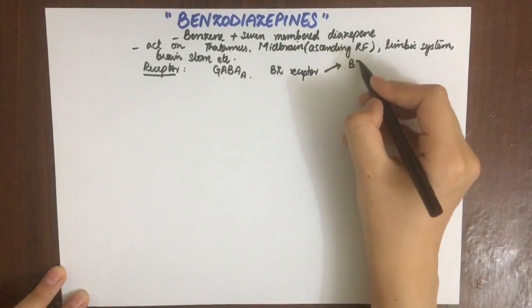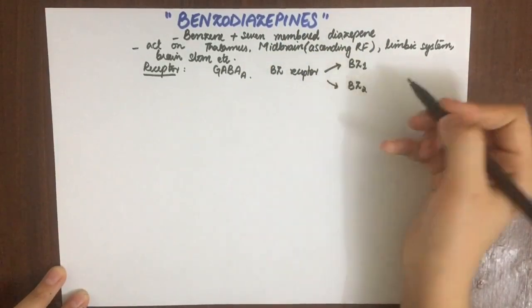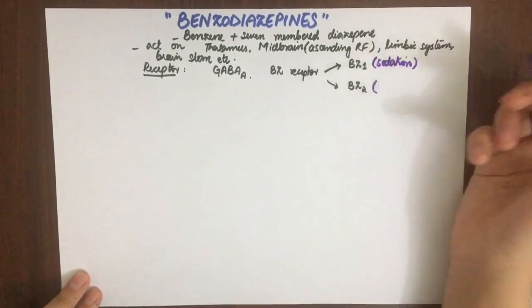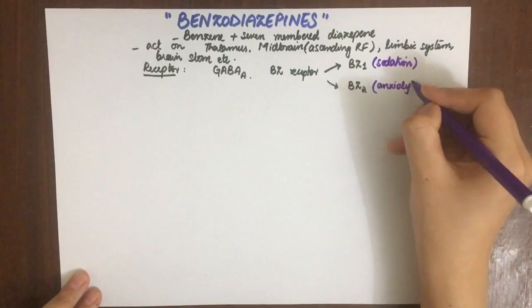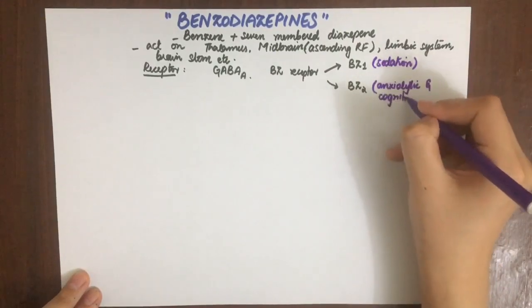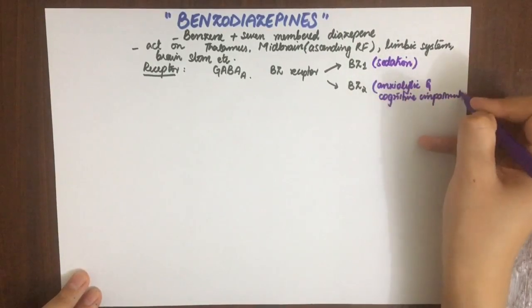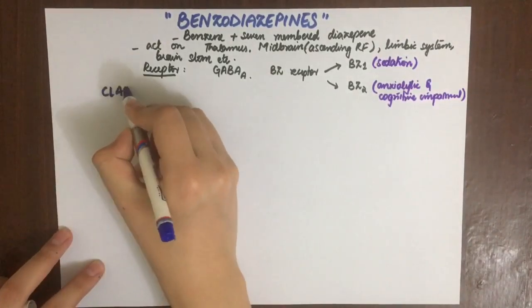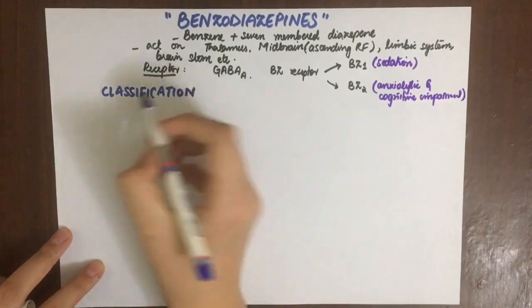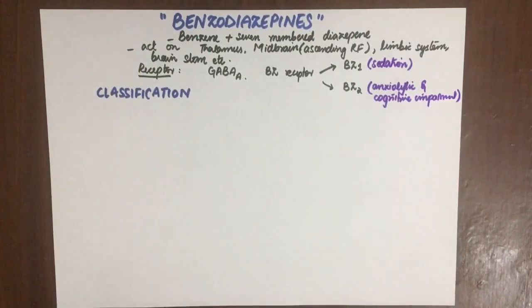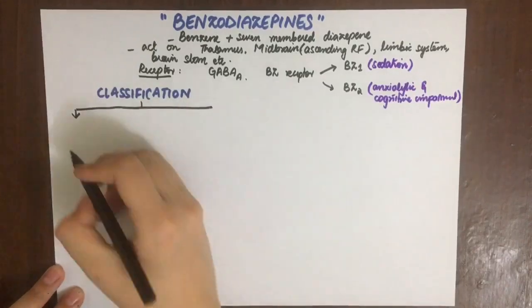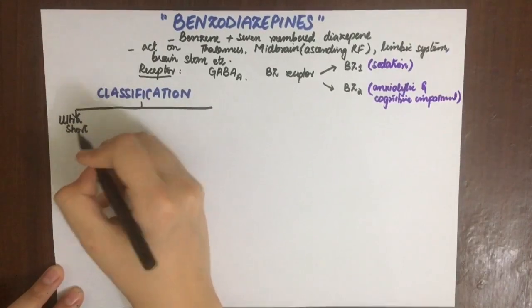The receptor that benzodiazepines act on is the GABA-A receptor, which has a specific benzodiazepine binding site. There are two types: BZ1 and BZ2, similar to the alpha-1 and alpha-2/3 subtypes discussed in previous videos — just different names. BZ1 is for sedation, and BZ2 is for anxiolytic effects and cognitive impairment. Benzodiazepines act on both of them.